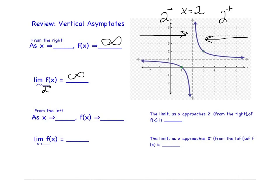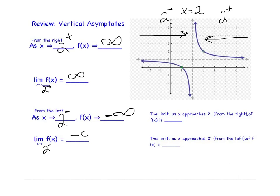At the same vertical asymptote, as x approaches 2 from the left, what is f of x doing? It's decreasing without bound. As x approaches 2 from the left — that's 2 with a minus — f of x is going to negative infinity. So the limit as x approaches 2 from the left is negative infinity.